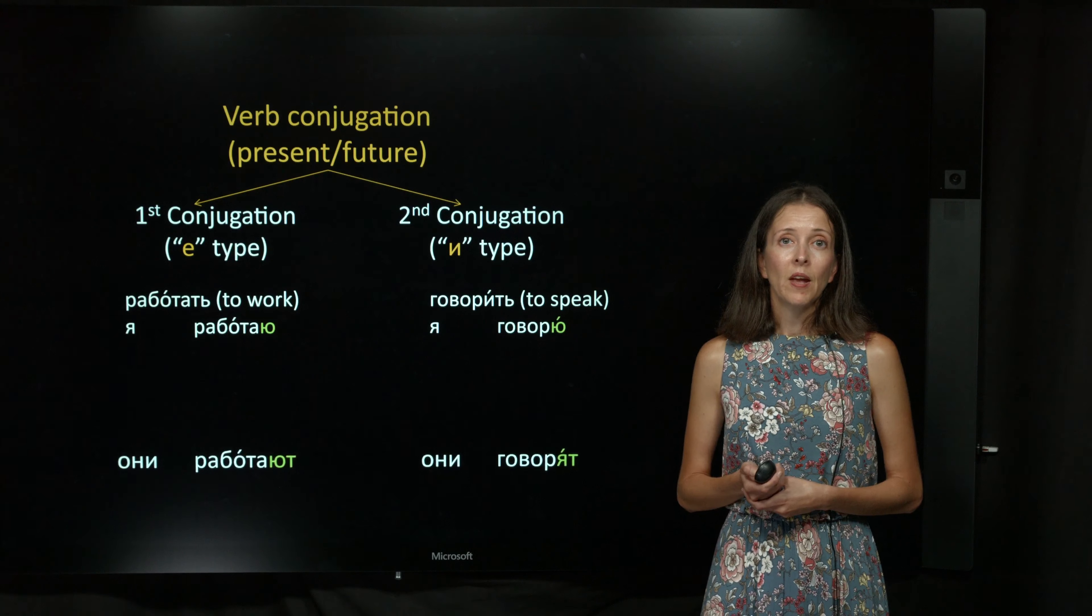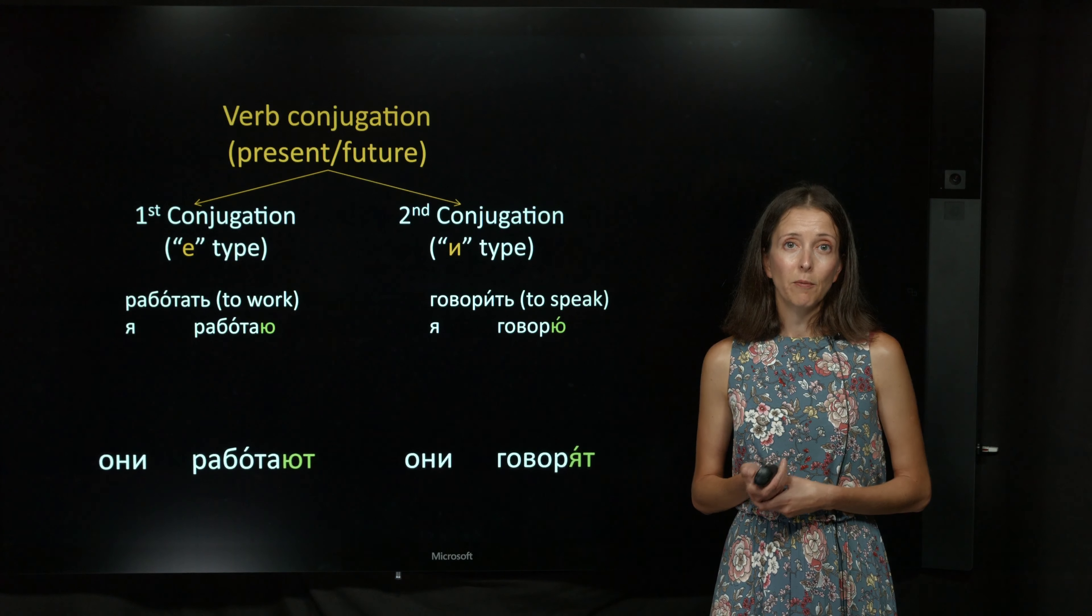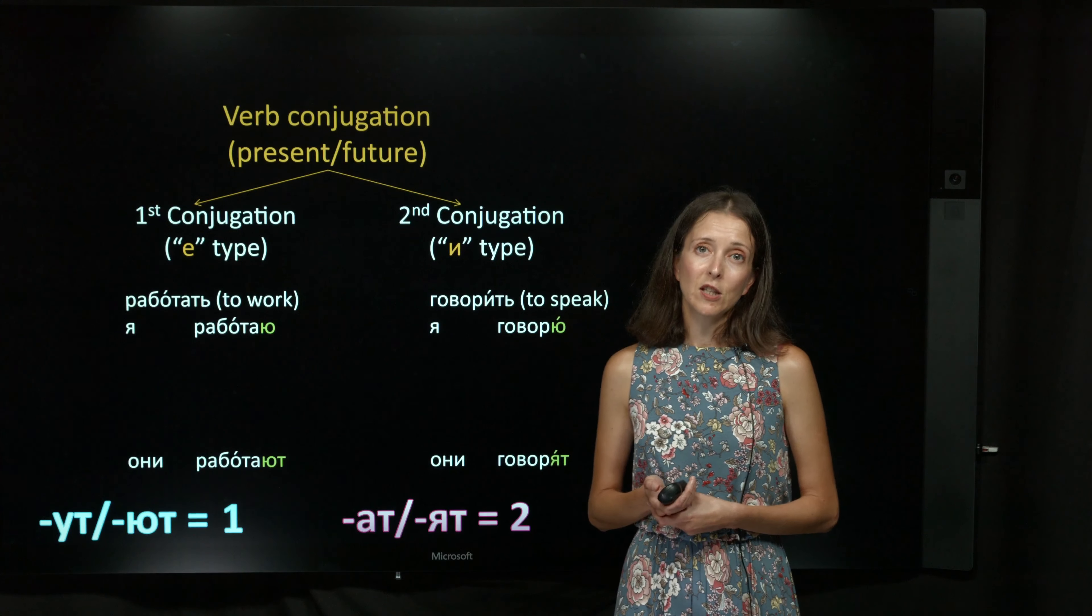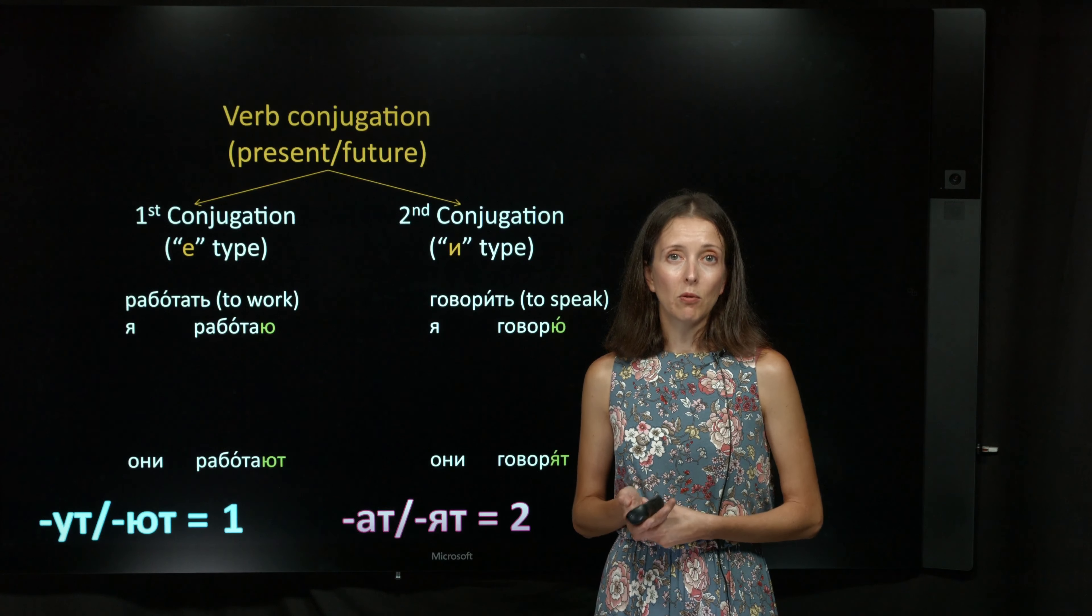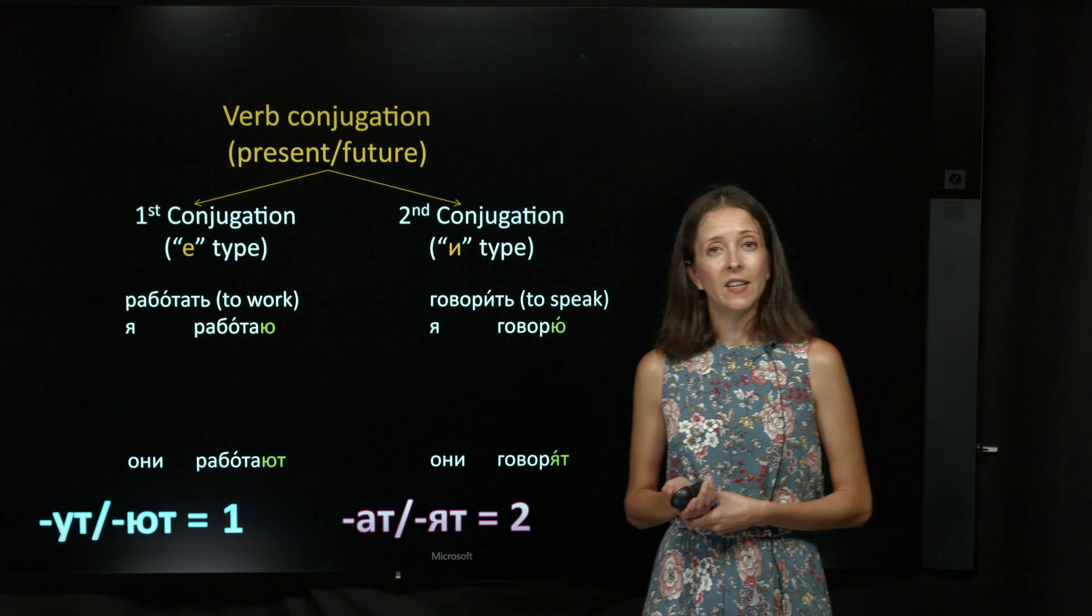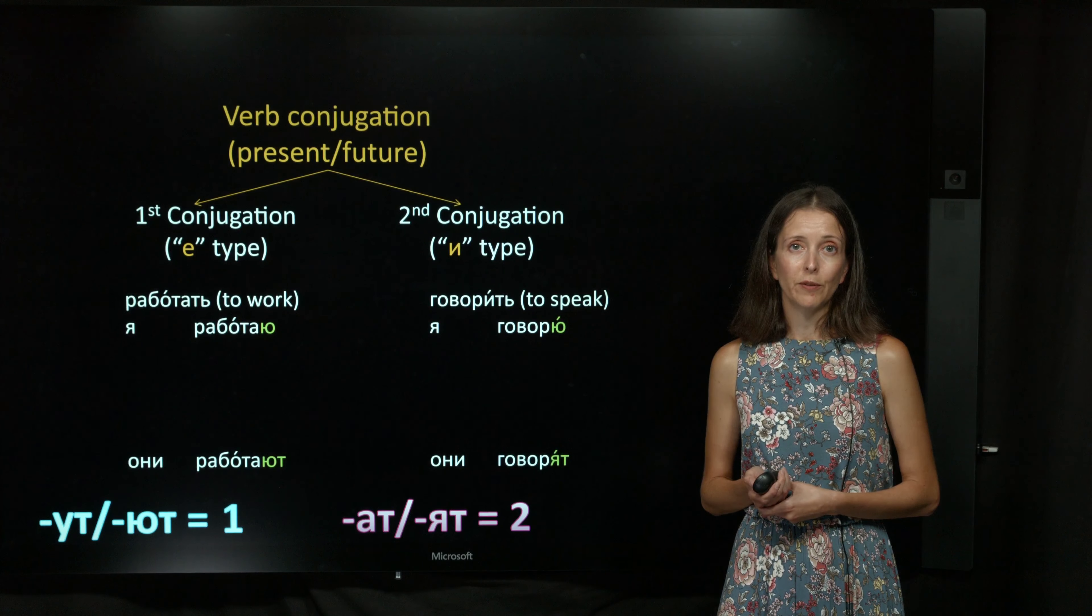The они form will give you important information about the conjugation of the verb. If the ending is УТ or ЮТ, it belongs to the first conjugation. If the ending is АТ or ЯТ, it's a second conjugation verb.